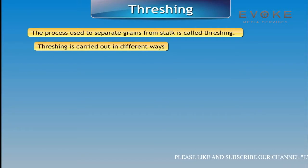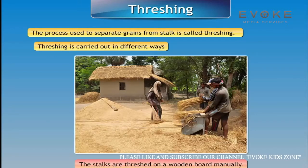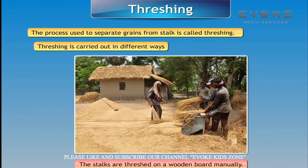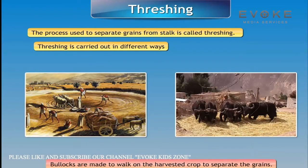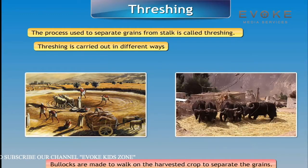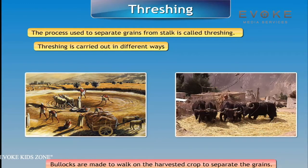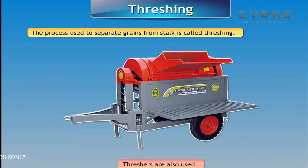Threshing is carried out in different ways: the stalks are threshed on a wooden board manually, bullocks are made to walk on the harvested crop to separate the grains, and threshers are also used.